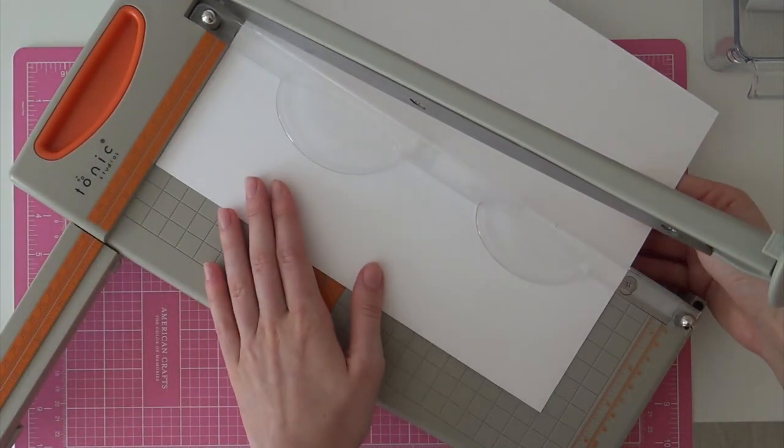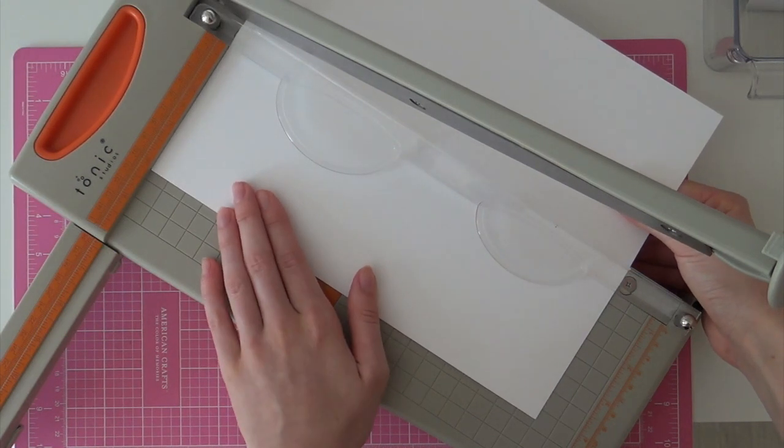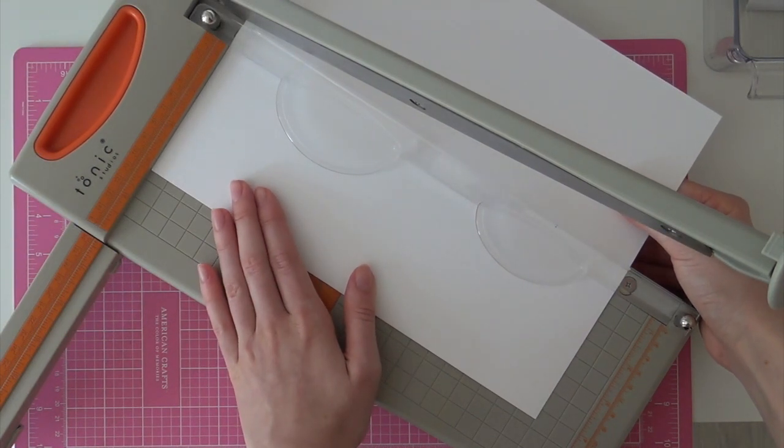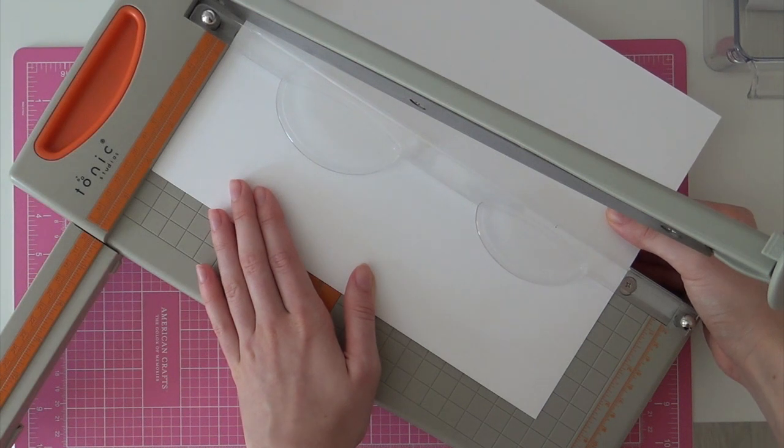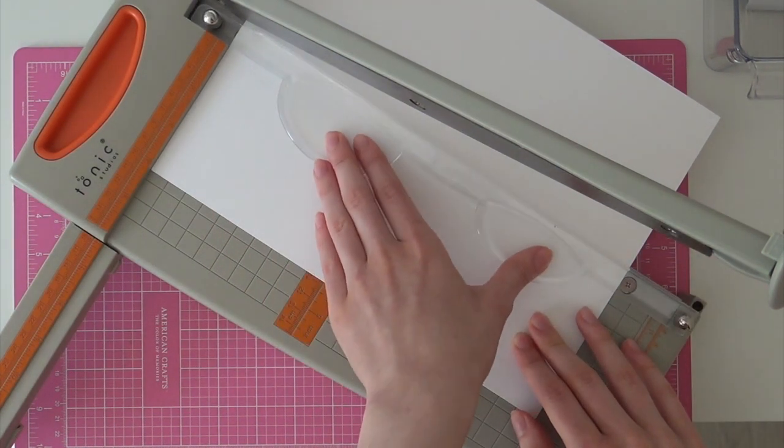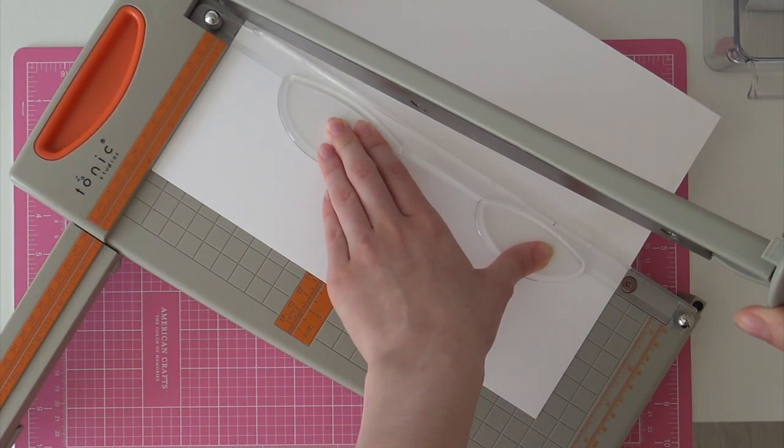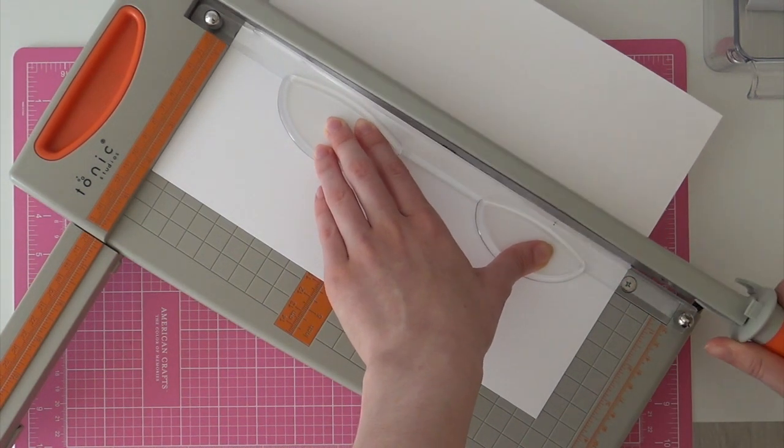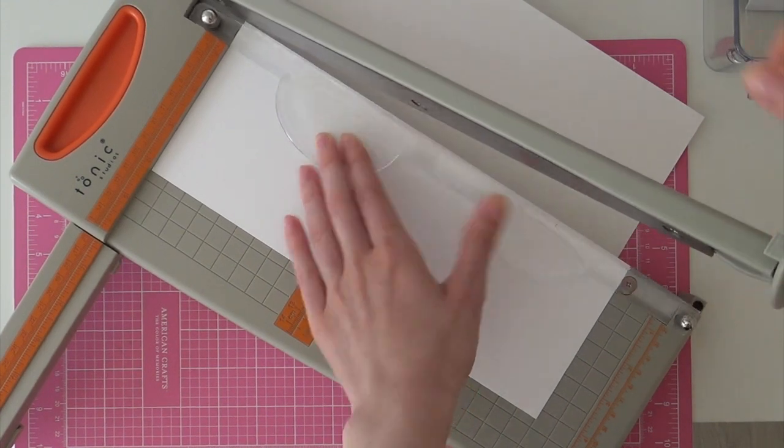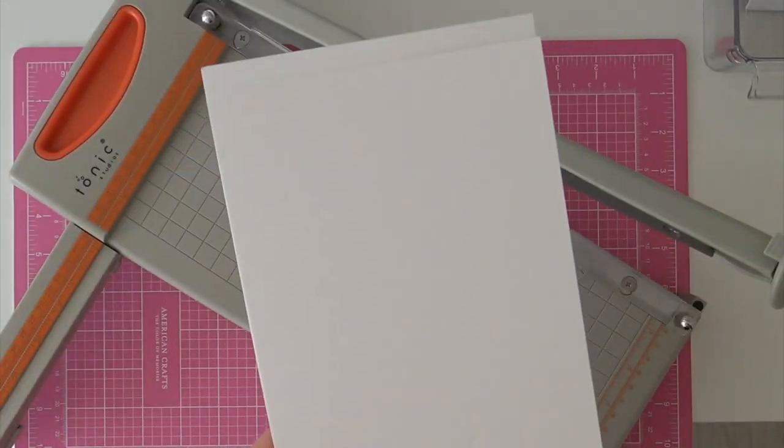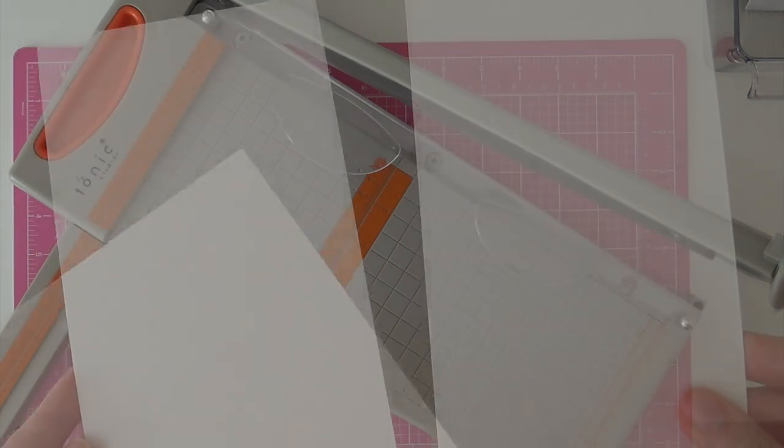And then I'm going to line it up with the four and the quarter marking. I'm going to push down the safety guards and then move the arm all the way down. And then you have a perfect portrait card.